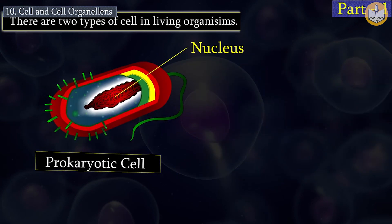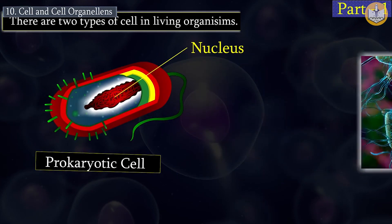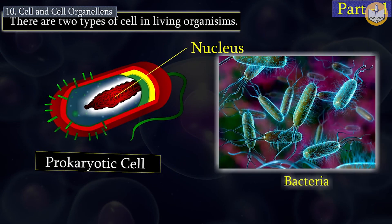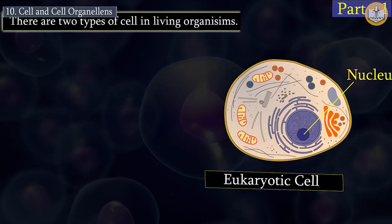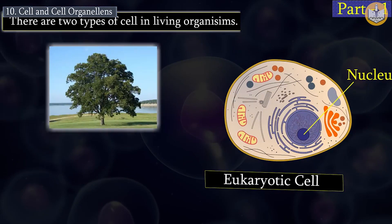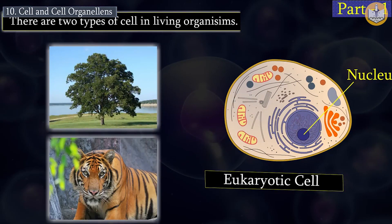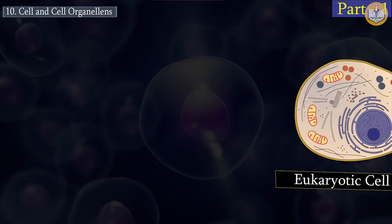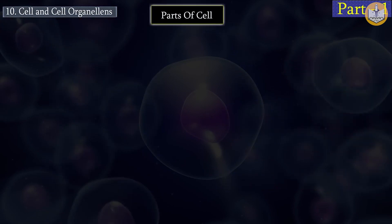Prokaryotic cells are mostly found in unicellular organisms. Eukaryotic cells are mostly found in multicellular animals and plants.